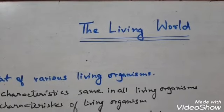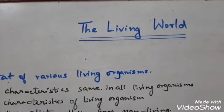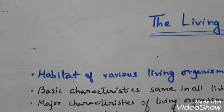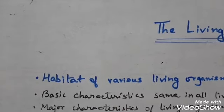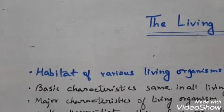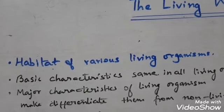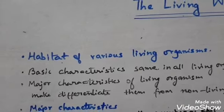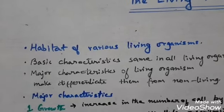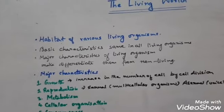Each and every organism — whether snail, worm, fish, or plant — has its specific habitat. Habitat is the dwelling place of an organism. Every living organism lives in its own habitat; it may be a mountain, a forest, a desert, or an ocean. These habitats may differ from each other, but in general all organisms share some basic characteristics, and those basic characteristics make a thing living.